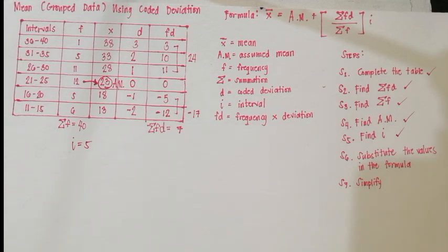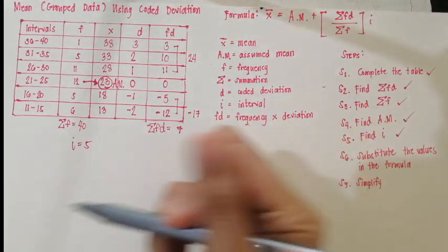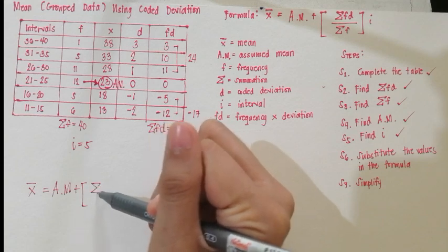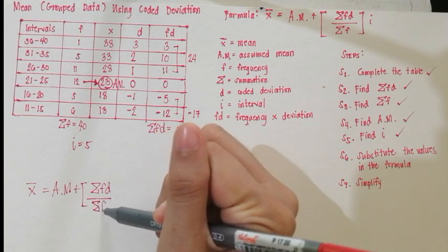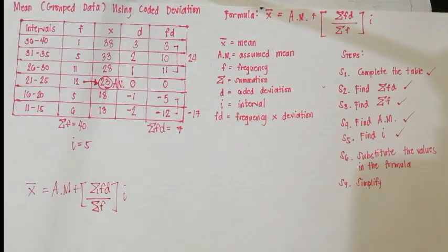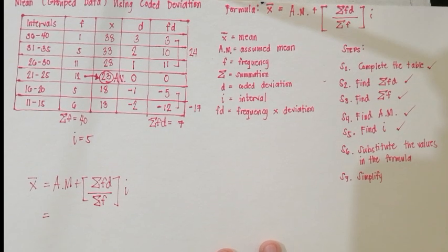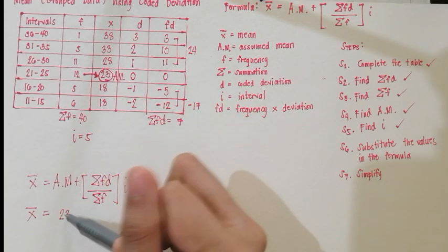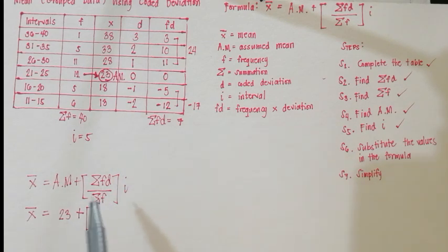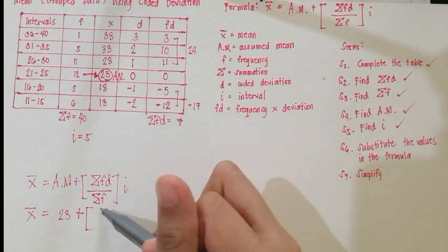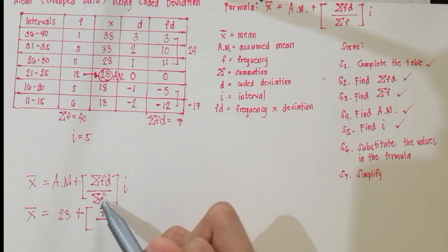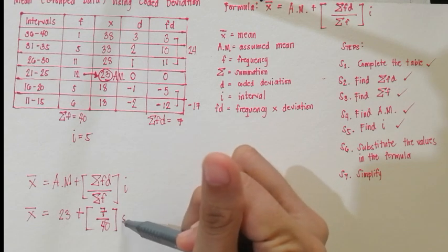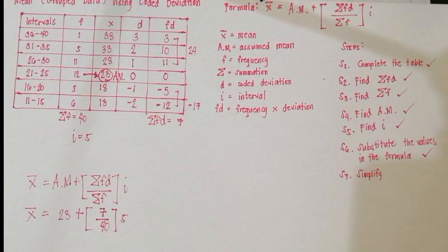Step 6: substitute the values in the formula. Mean is equal to AM plus the quantity summation of FD divided by summation of F, times I. Substituting: AM is 23, summation of FD is 7, summation of F is 40, and I is 5. Step 6 is done.